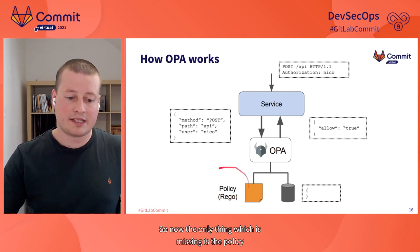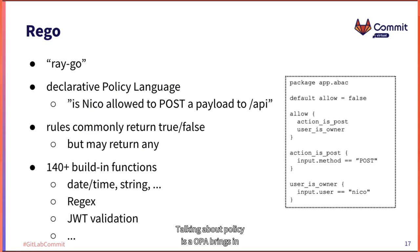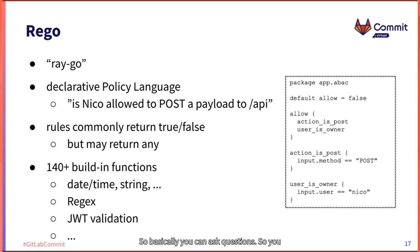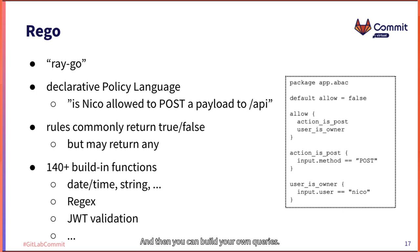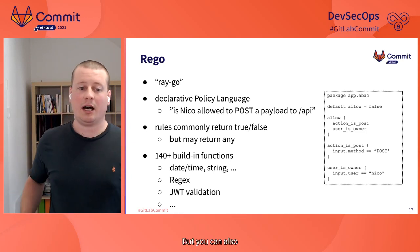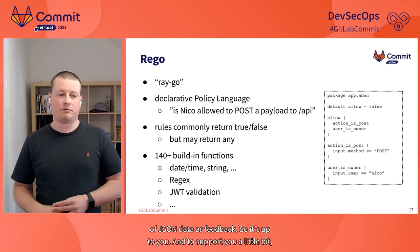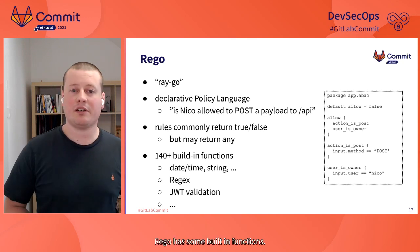The only thing missing is the policy part. OPA brings its own policy language called Rego — it's a declarative language. You can ask questions like: is Nico allowed to POST a payload to /api? The result of those policies can be true or false, or you can build anything further and return any kind of JSON data as feedback. Rego also has over 140 built-in functions for time, date, string operations, regex, JWT validation, and much more.